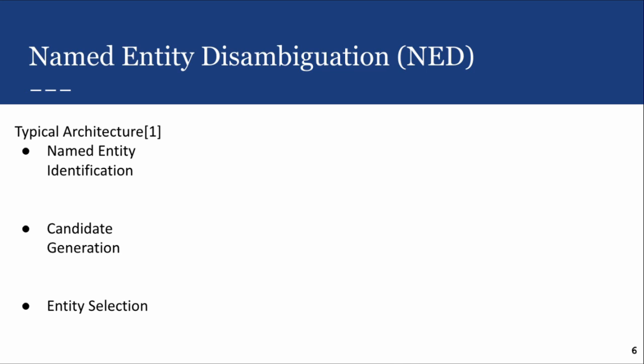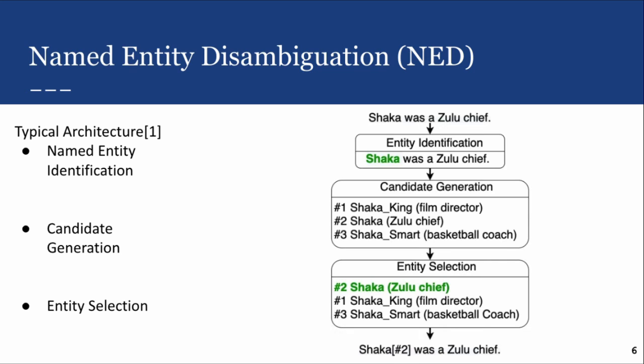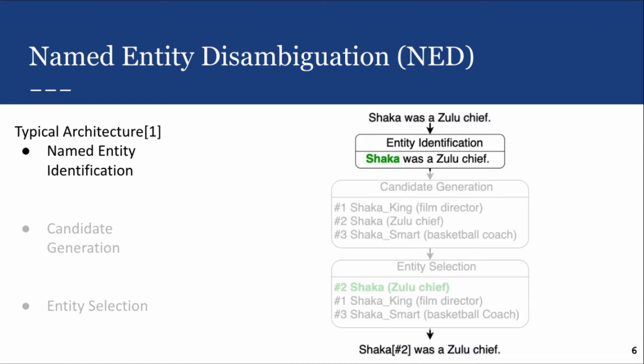This is usually done using a named entity disambiguation, or NED, system. The architecture we are using makes use of three modules. Firstly, entity identification — this simply involves going through the text and identifying all the names of people or mentions that occur within the text.